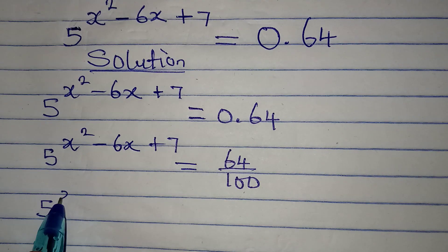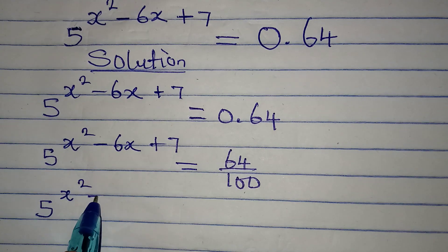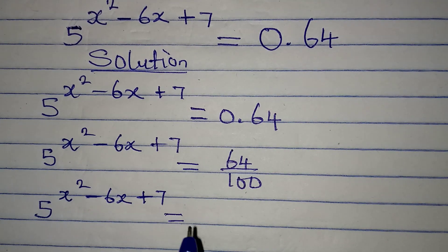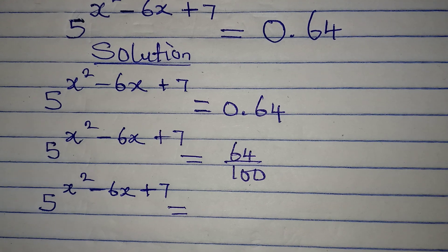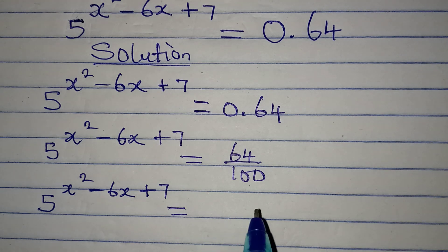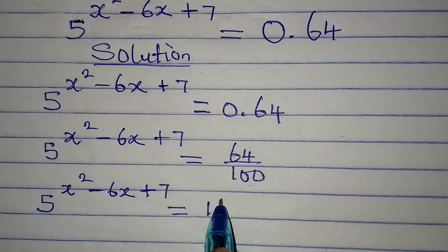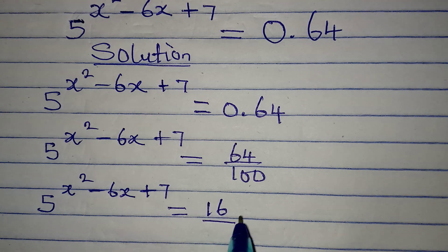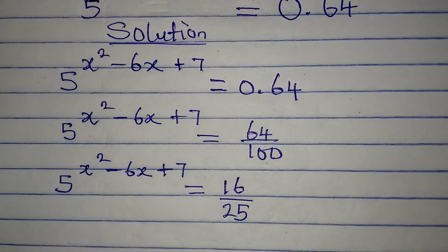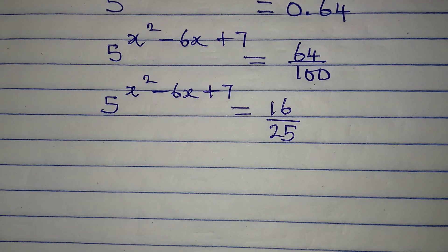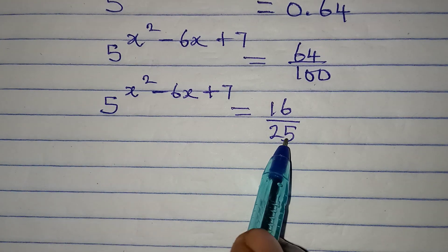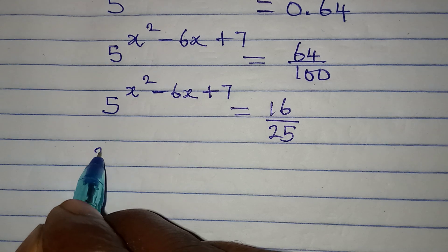The next thing I'm going to do is to reduce this to a lower term. So I have 5 to the power of x squared minus 6x plus 7, equal to — let's reduce this: 64 divided by 4 will give us 16, then 100 divided by 4 will give us 25. The next thing I'm going to do is to cross multiply.